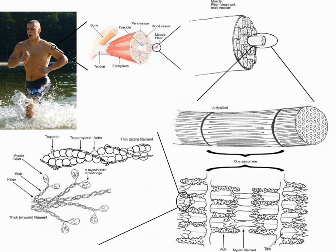Cardiac muscle is also an involuntary muscle, but is more akin in structure to skeletal muscle, and is found only in the heart. Cardiac and skeletal muscles are striated, in that they contain sarcomeres that are packed into highly regular arrangements of bundles. The myofibrils of smooth muscle cells are not arranged in sarcomeres and so are not striated. While the sarcomeres in skeletal muscles are arranged in regular, parallel bundles, cardiac muscle sarcomeres connect at branching, irregular angles called intercalated discs.